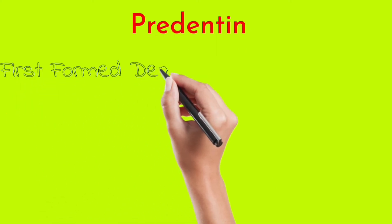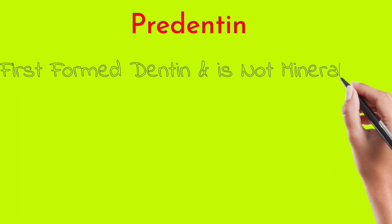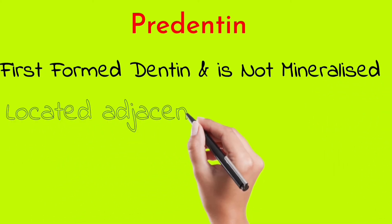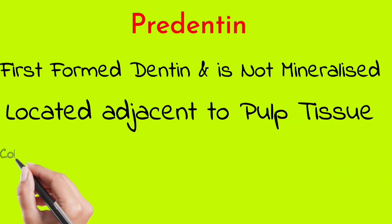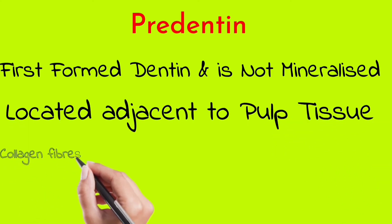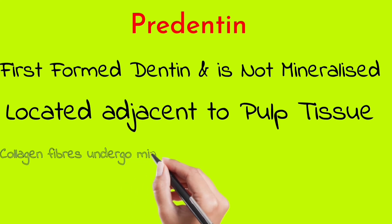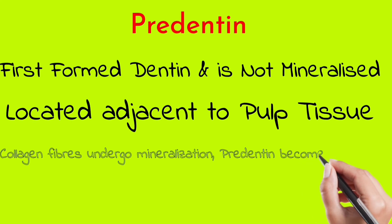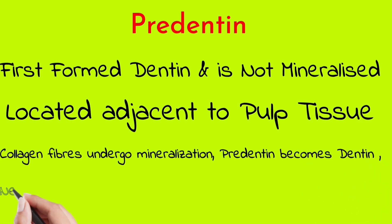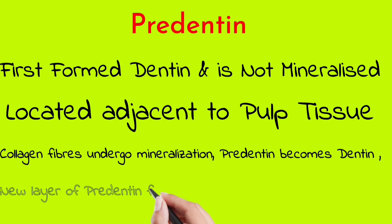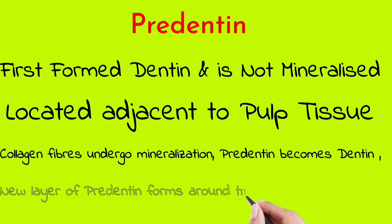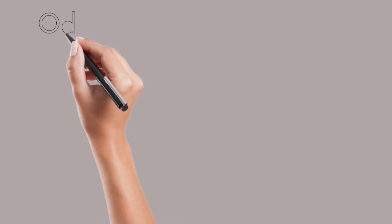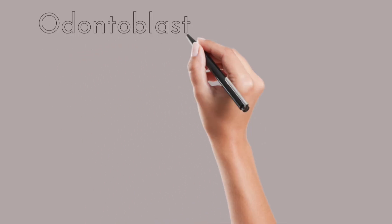Pre-dentine is the first formed dentine and it is not mineralized. It is located adjacent to the pulp tissue. The collagen fibers undergo mineralization and pre-dentine then becomes dentine. New layers of pre-dentine form around the pulp in a circumpulpal manner.